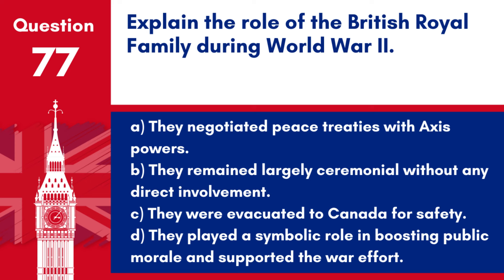Question 77. Explain the role of the British royal family during World War II. a. They negotiated peace treaties with Axis powers. b. They remained largely ceremonial without any direct involvement. c. They were evacuated to Canada for safety. d. They played a symbolic role in boosting public morale and supported the war effort. Answer: d. During World War II, members of the British royal family, particularly King George VI and Queen Elizabeth, played significant roles in boosting public morale through their appearances, speeches, and visits to troops and bombed areas.